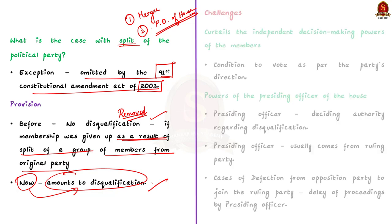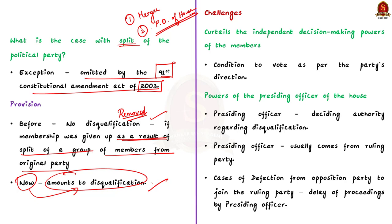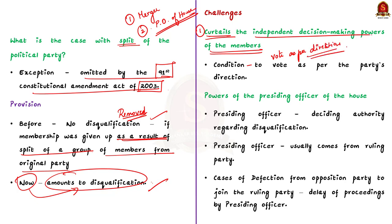Moving on to the challenges associated with the anti-defection law. The first challenge is that the anti-defection law curtails the independent decision-making powers of the members of the legislature. The law says that a member should vote as per the party's direction; if they vote against the direction of the political party, they will be disqualified, which curtails the liberty of legislators.